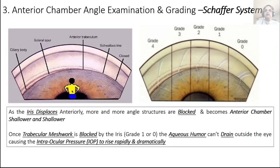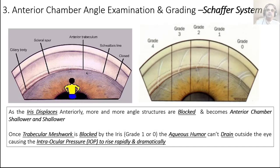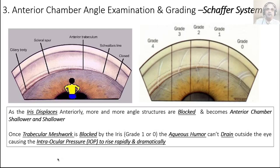As you can see, as the iris displaces anteriorly it covers more and more angle structures, those structures stop functioning, and the anterior chamber becomes shallower. From grade 4 — where you can see all structures — to grade 0 — where you can see nothing. The ciliary body band is the dark band, the scleral spur is the white line, then the trabecular meshwork, and Schwalbe's line at the top. Once the trabecular meshwork is blocked, pressure starts rising rapidly.